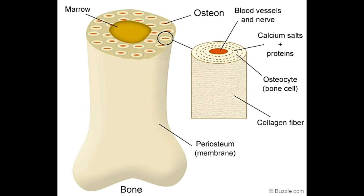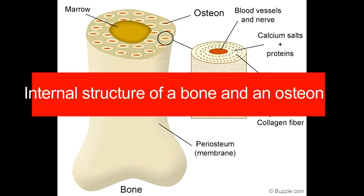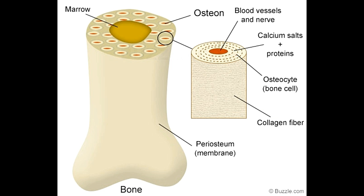Osteocytes are cells that form the bones themselves. Osteoblasts are responsible for the formation of new osteocytes, whereas osteoclasts are responsible for the resorption of old bone matter. Thus, between them, the three types of bone cells regulate the formation, sustenance, and decay of bones.